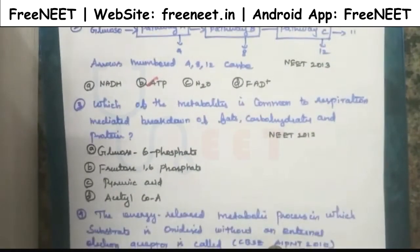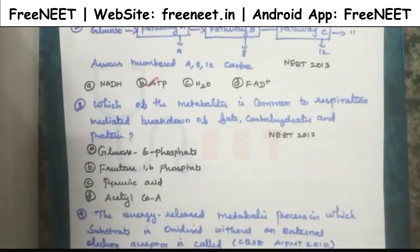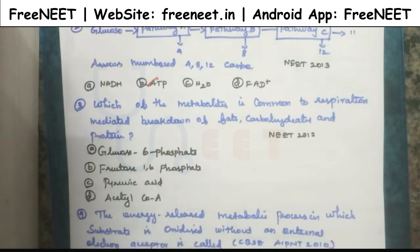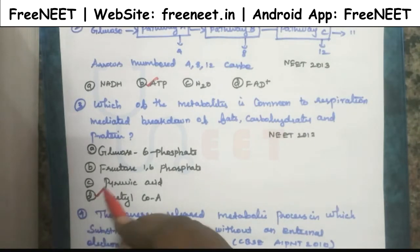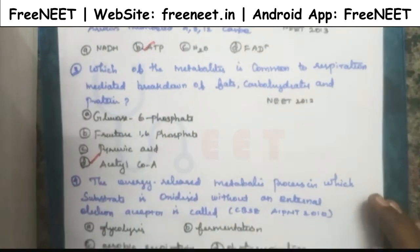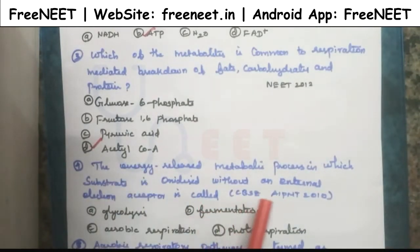The next question asks: which metabolite is common to the respiration-mediated breakdown of fats, carbohydrates, and proteins? We know that before the Krebs cycle, fats, carbohydrates, and proteins are all broken down using acetyl coenzyme A. So the answer is acetyl coenzyme A.